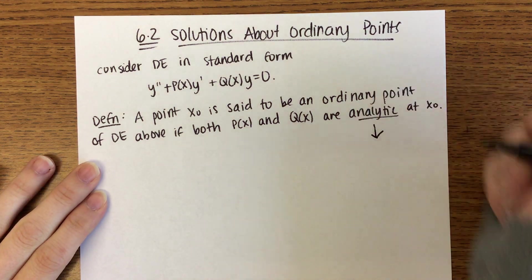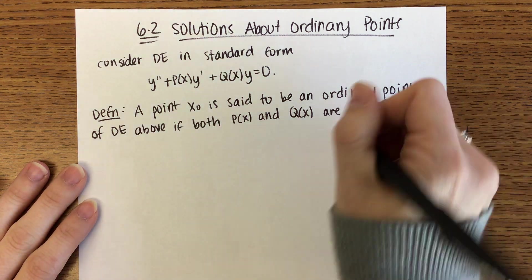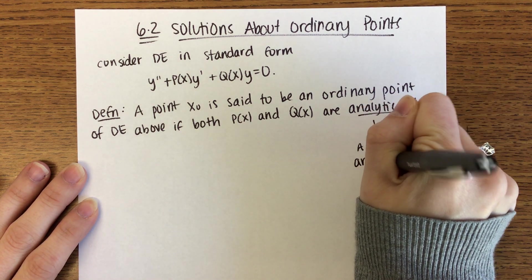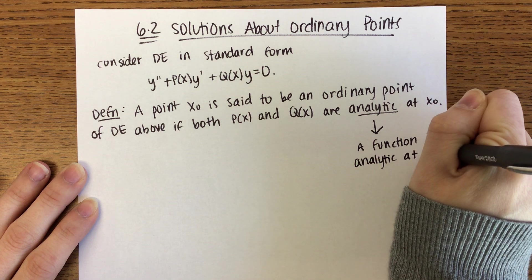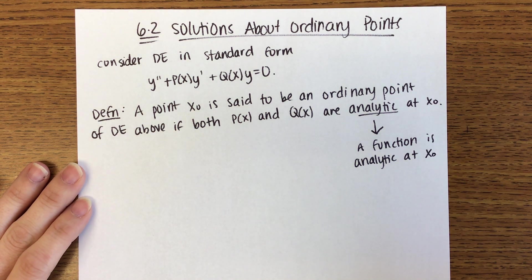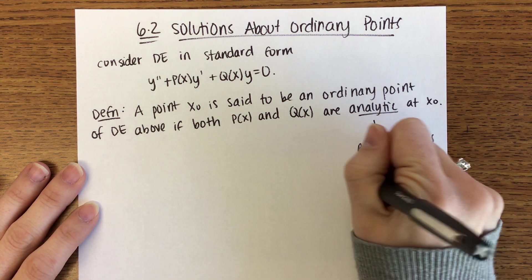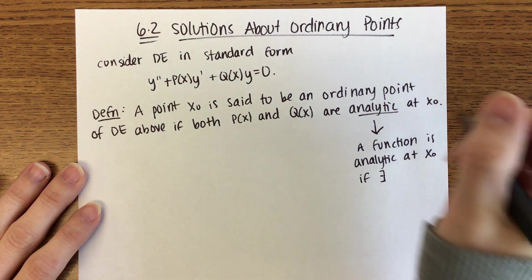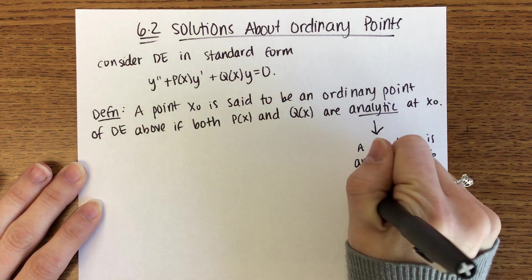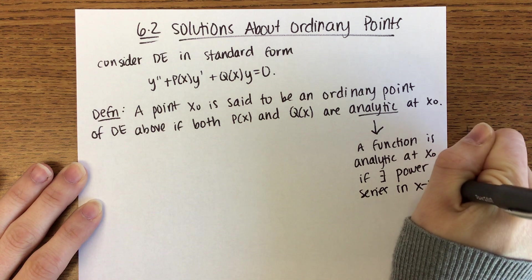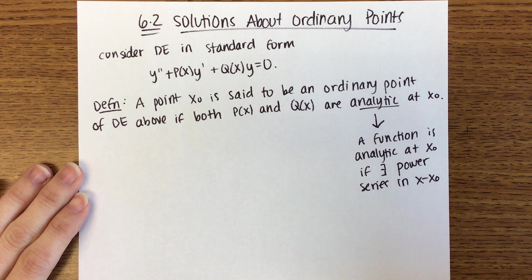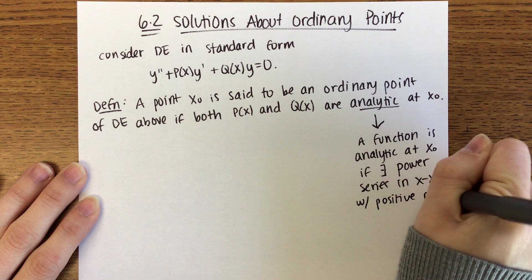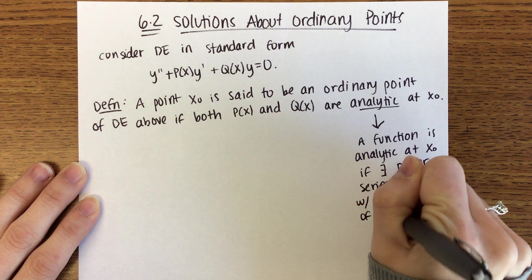We need to remind ourselves what analytic means. We say a function is analytic at x-naught — in your notes I used A, but staying consistent with x-naught — if there exists a power series in x minus x-naught with a positive radius of convergence.